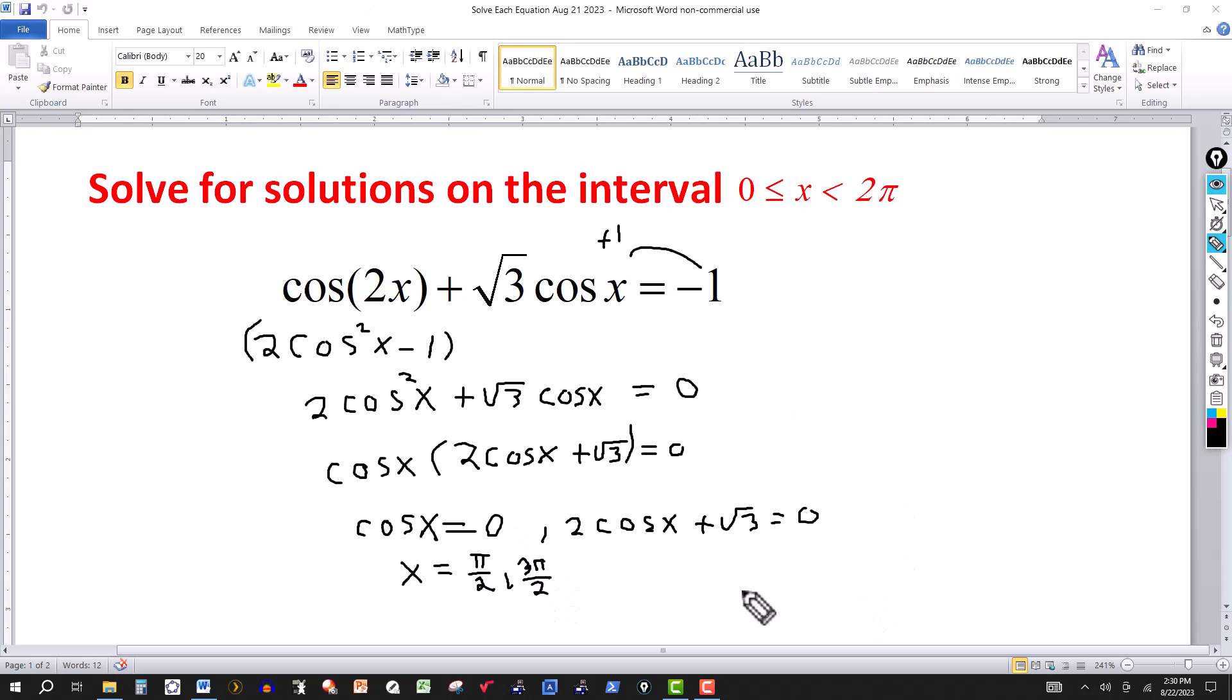Now for this one here, two cosine of x plus the square root of three equals zero. If I isolate the cosine function by adding negative radical three to both sides, I'm going to get this to start off with, and then I divide through by two.